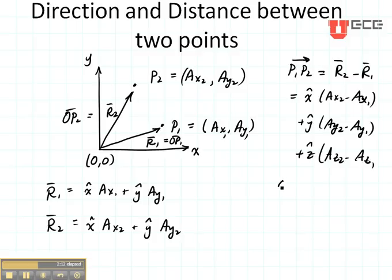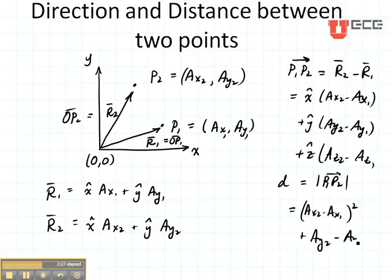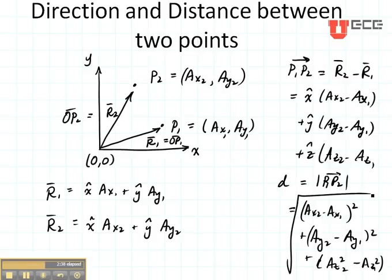If we wanted to know the distance between the two points, that's the magnitude of P1 to P2, and that would just be the square root of (AX2 minus AX1) squared plus (AY2 minus AY1) squared, plus the same thing for Z. So this gives us the vector from P1 to P2, and its distance — the magnitude D.